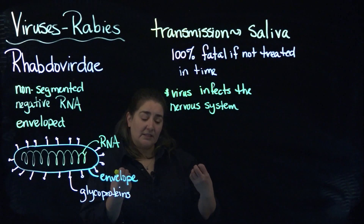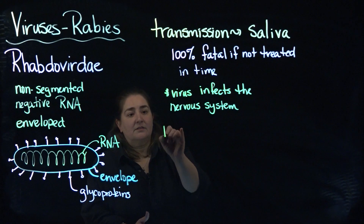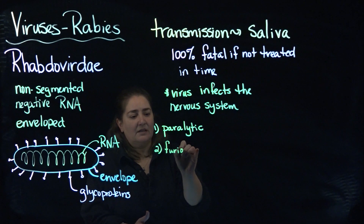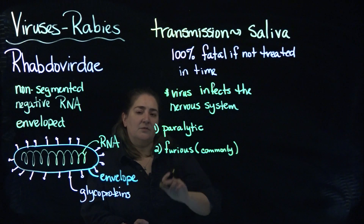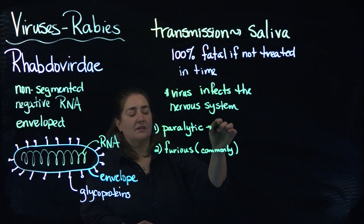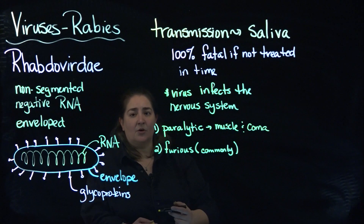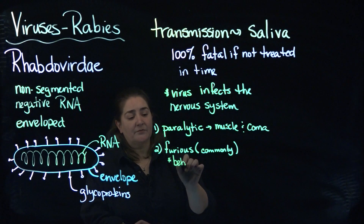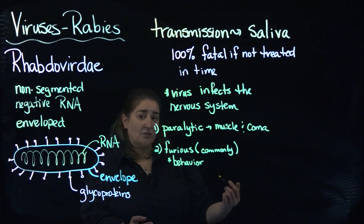In particular, those behaviors are characteristic of furious rabies. There is also another form known as paralytic rabies. With paralytic rabies, you tend to have muscle paralysis — as the name suggests — and it also tends to result in coma. Furious rabies is the form commonly described in the literature and is associated with aggression, agitation, and other strange behaviors.